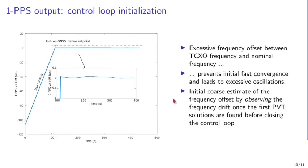The control loop initialization is a challenge when using the TCXO, which may start very far from the targeted frequency. Initially the oscillator runs free; after about 100 seconds GNSS-SDR locks on the GPS constellation and provides the PVT solution. We then observe for a few seconds the frequency drift to properly initialize the DDS with a value close to the targeted frequency before starting the control loop. This approach achieves well better than ±100 ns in the short term and avoids the large frequency oscillations a PI controller would produce when starting too far from the set point.